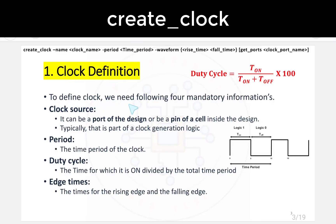To define a clock we need four mandatory pieces of information: clock source, period, duty cycle, and edge times. The clock source can be a port of a design or a pin of a cell inside the design — typically part of the clock generation logic.